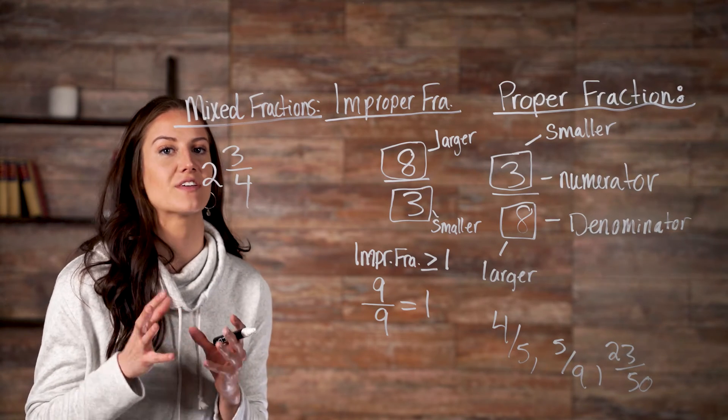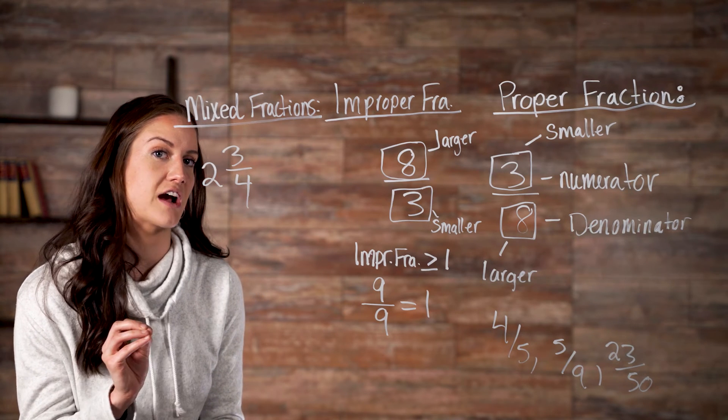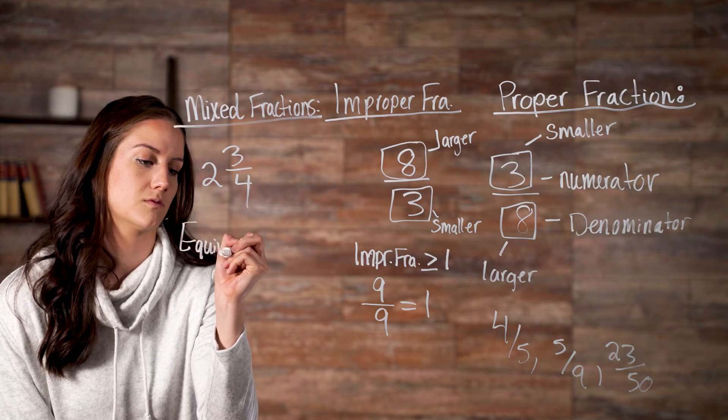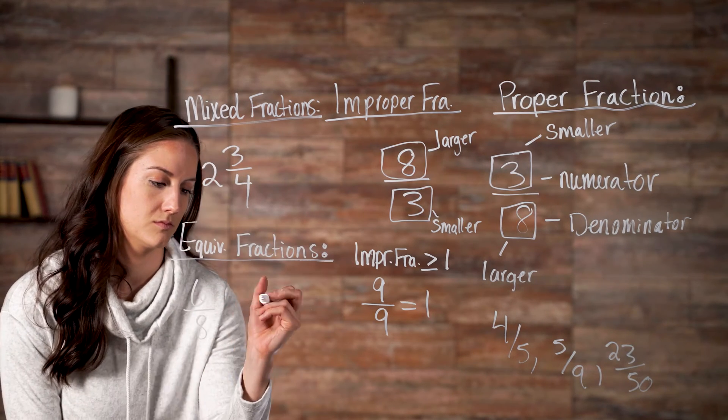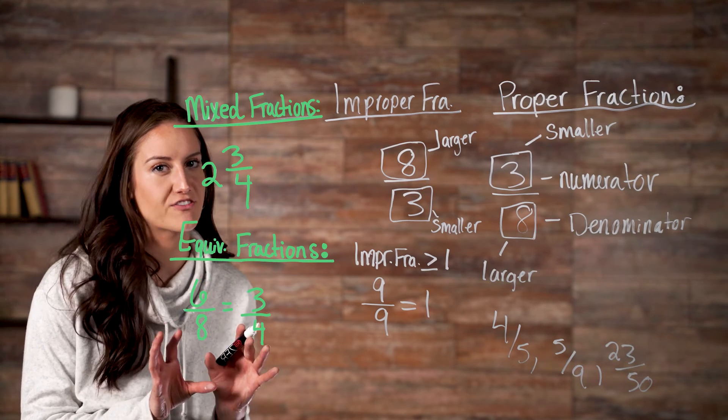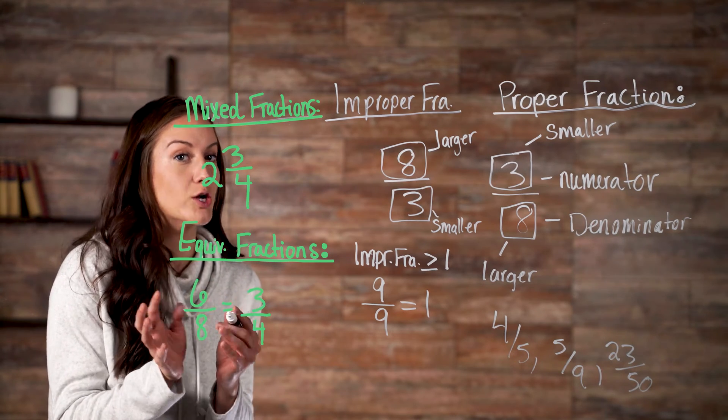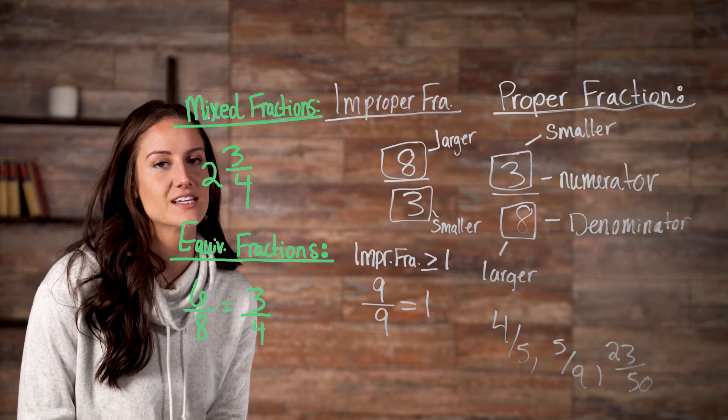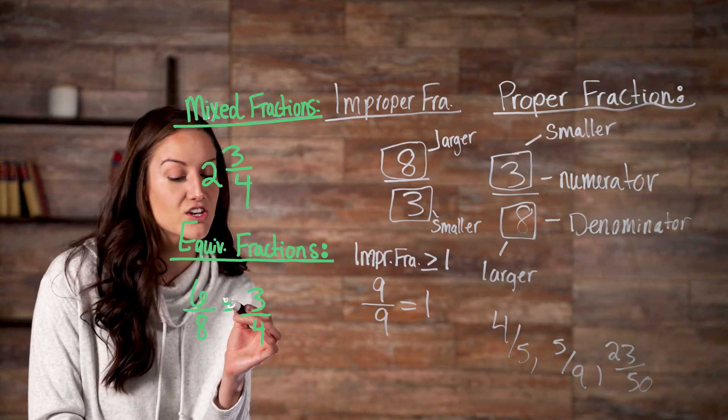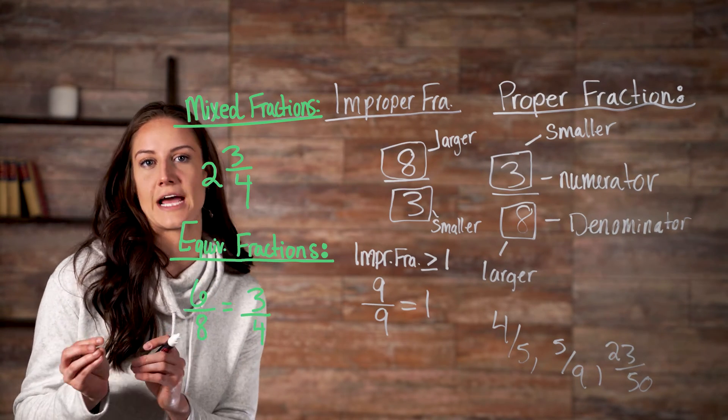We also have equivalent fractions. Equivalent fractions are two different fractions that name the same number. For example, six-eighths and three-fourths look different, but they're the same. Three-fourths is just a simplified or reduced version of six-eighths. To simplify six-eighths, you just divide the numerator and the denominator by two to get three-fourths.